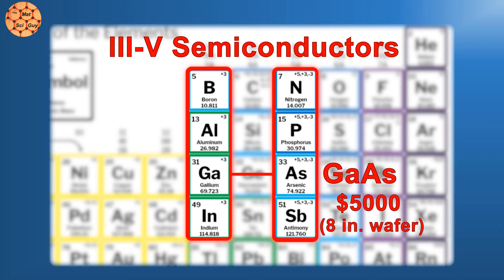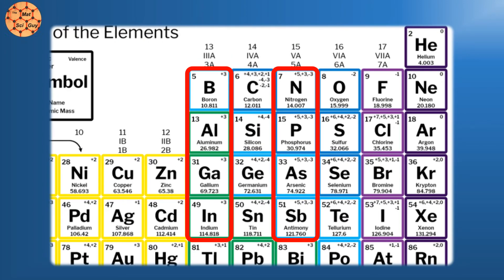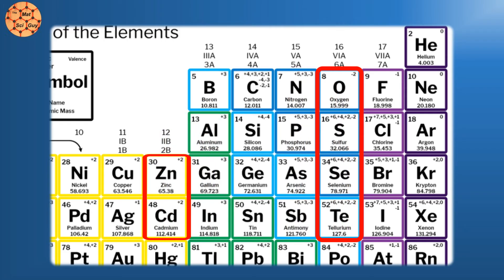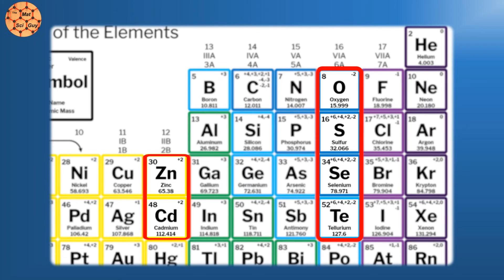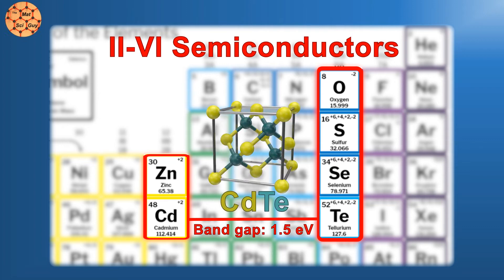So, let's branch out a bit in our search for good solar materials. If 3 and 5 average to 4, what about taking it one step further and going to groups 2 and 6? It's a simple idea, but it actually works in some cases. 2-6 semiconductors aren't as widely used as their 3-5 brethren, but one combination turns out to be useful for our purpose. Group 2 element cadmium and group 6 element tellurium. Put these two together, and you get a bandgap of about 1.5 eV, almost perfect for solar.